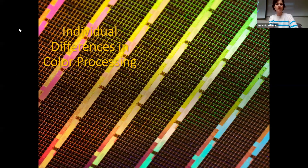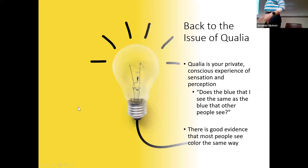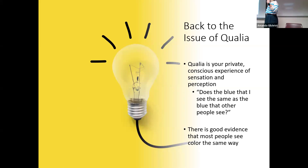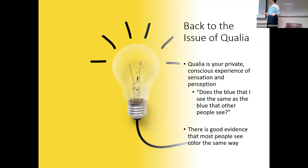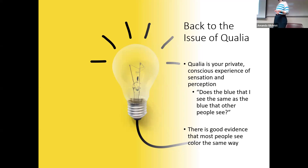We're going to start by talking about some different individual differences in color processing and get back to the issue of qualia. The question was: I see the color blue — how can I be sure that the blue I see matches what you see? The general consensus is you can't know someone's private subjective experience for sure, but we know that most of us are more alike in our processing than we are different. We have good evidence that most people see and process color the same way.